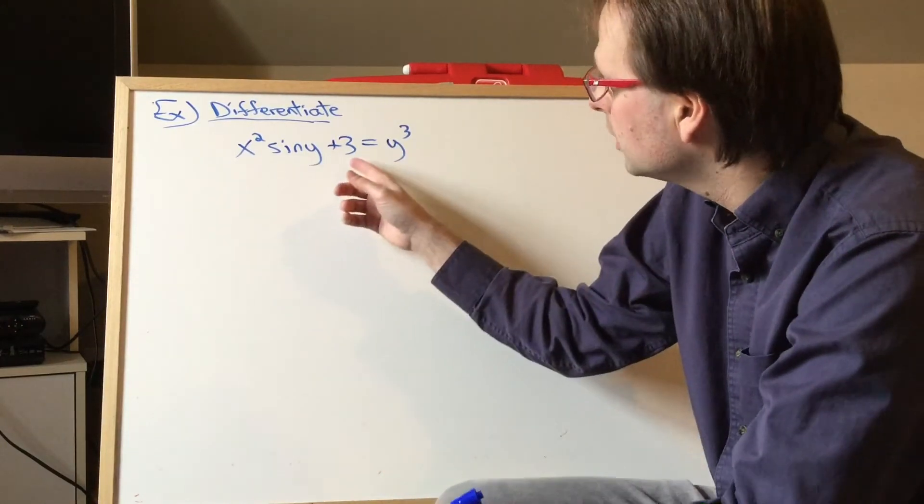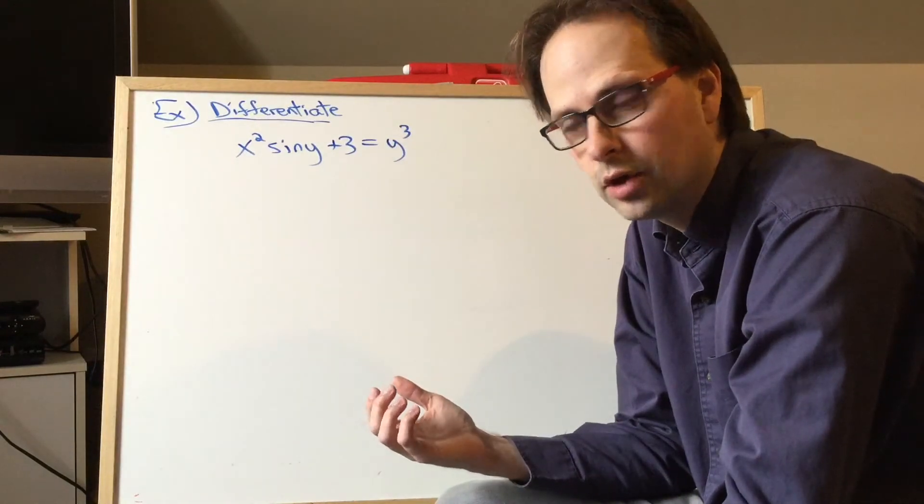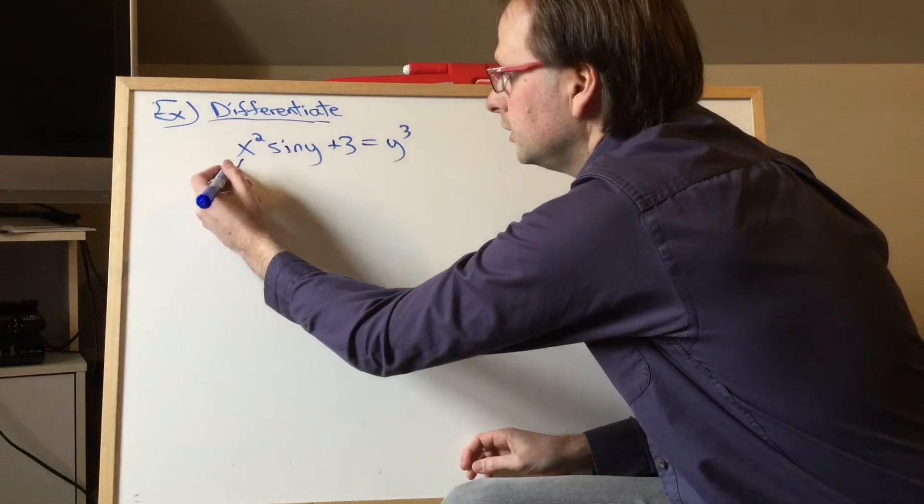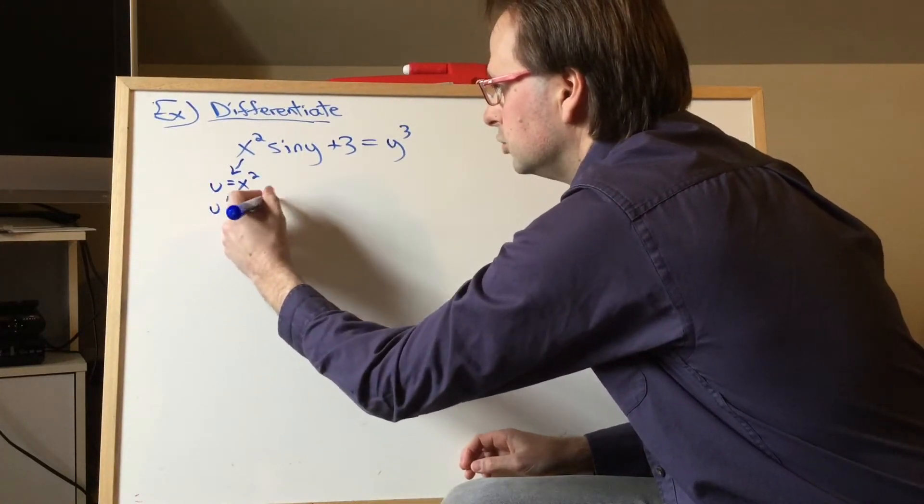So here we've got x squared sine y plus 3 equals y cubed. Obviously, we can't get y on its own, so we're just going to have to work with it. It's got a product in it, so I'd say u is x squared, u prime is 2x.